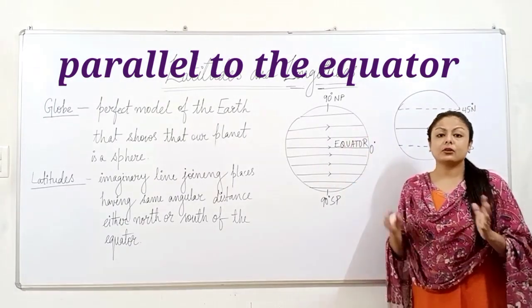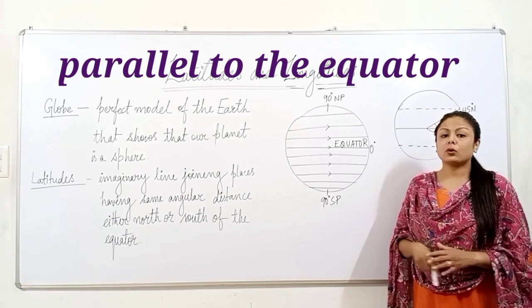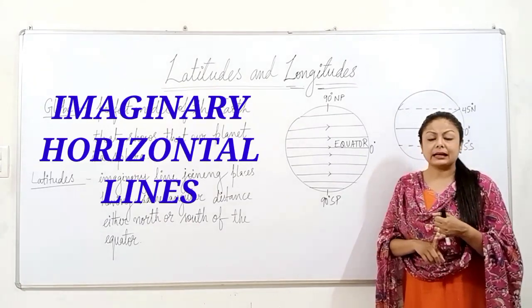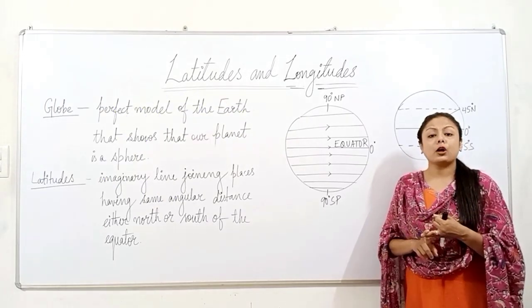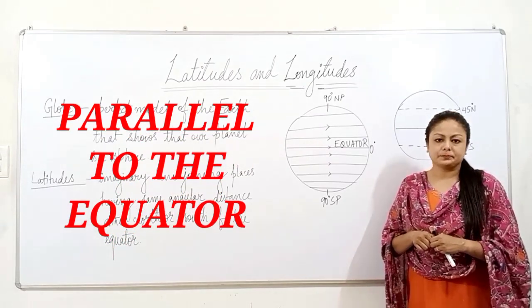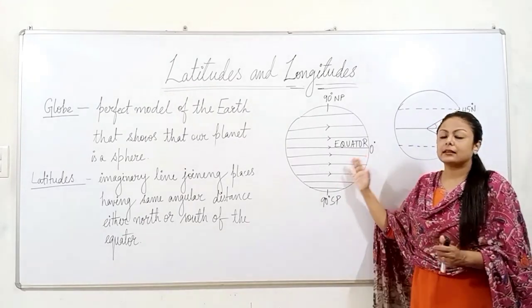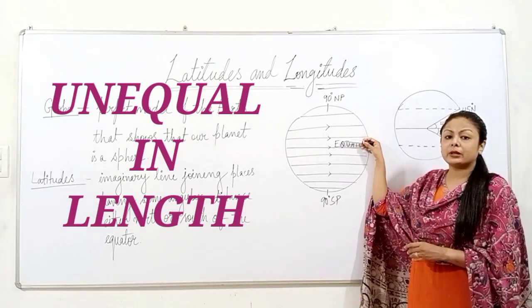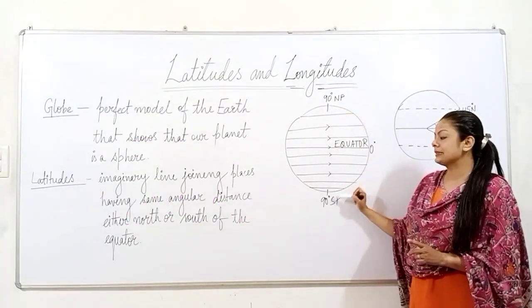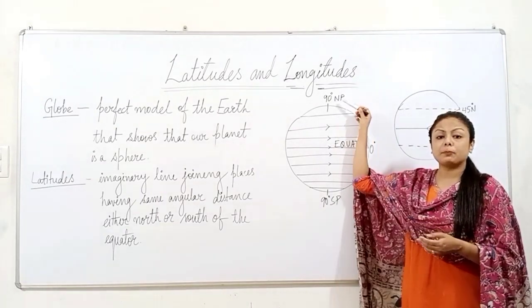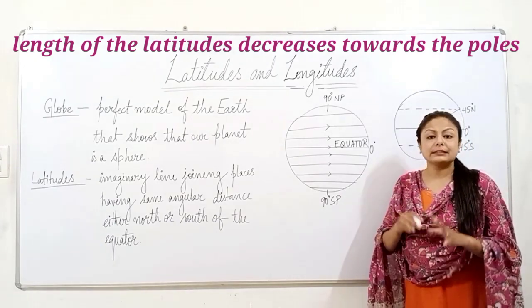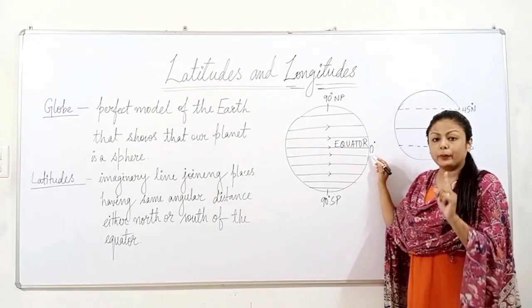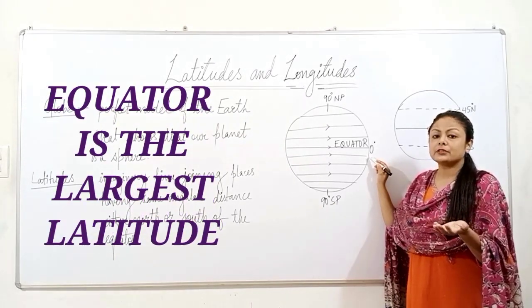The arrows show that all the latitudes are parallel to the equator. So the characteristics of latitude: first, they are imaginary horizontal lines. Second, they are all parallel to each other, that is they are parallel to the equator. By looking at the diagram we can also say that all the latitudes are not equal in length. When we move from the equator to the poles — the north pole and the south pole — the length of the latitudes decreases. The equator is the largest latitude and it is marked as 0 degrees.